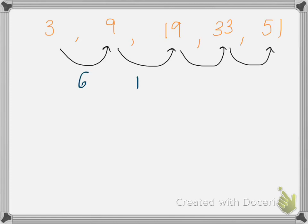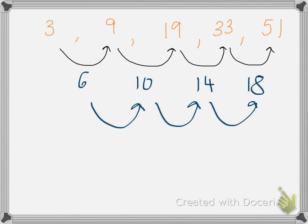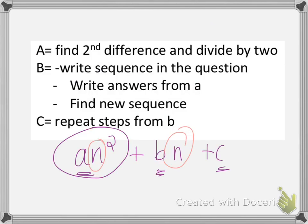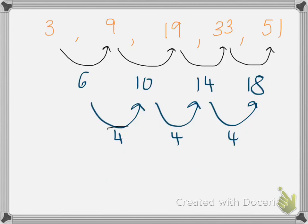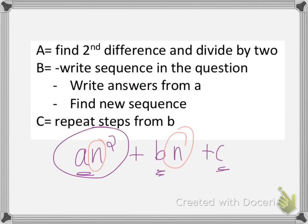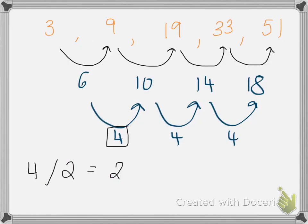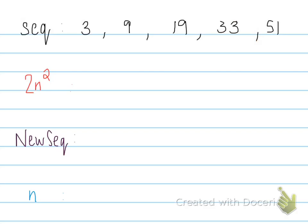For our working example, we first find the first differences: 6, 10, 14, and 18. Then we find the second row of differences and get 4 as the constant common difference, confirming it is a quadratic sequence. We apply the first rule: divide the common difference by 2, so 4 ÷ 2 = 2. The formula begins with 2n².